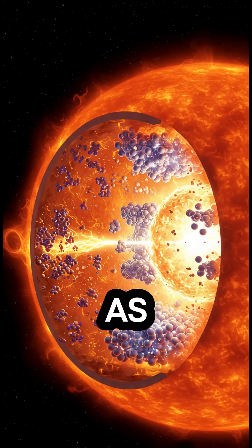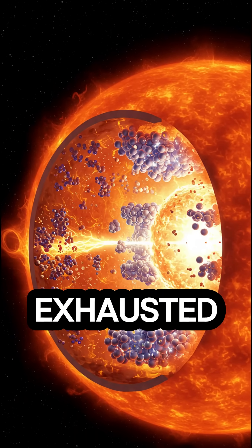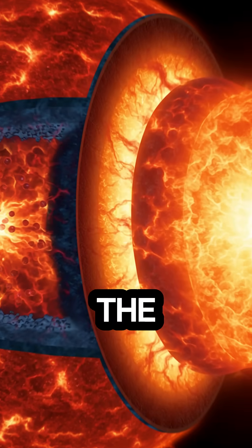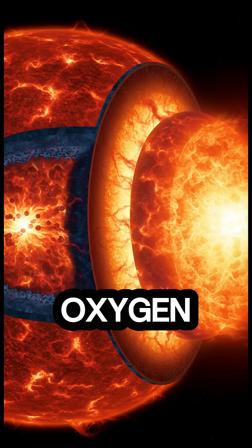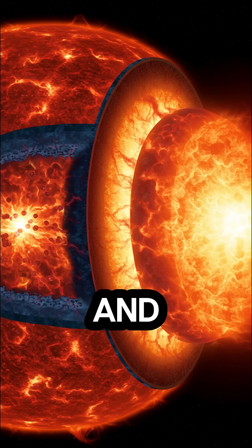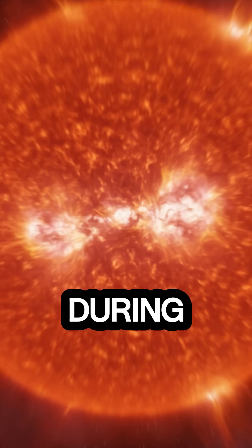At first, they fuse hydrogen as fuel, and once the hydrogen is exhausted, they begin fusing helium. As the process continues, they burn carbon, oxygen, neon, magnesium, and silicon, ultimately producing iron.